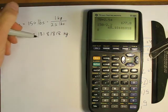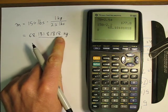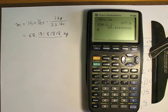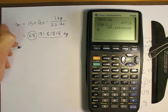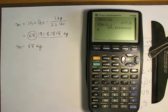And, I get that I am 68.18181818 kilograms. Again, this is ridiculous. All this here, that's ridiculous. I'm not measuring myself out to basically a millionth of a kilogram. So, I'm going to say that my mass is 68 kilograms.